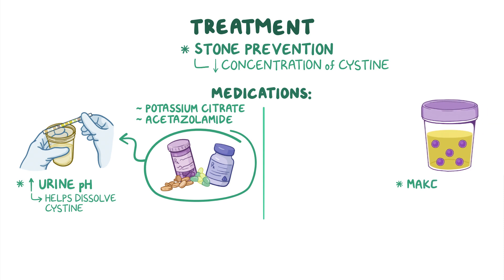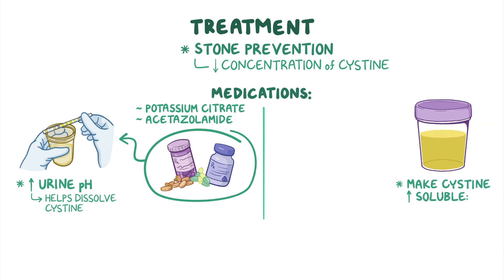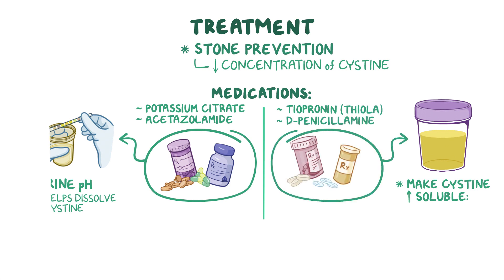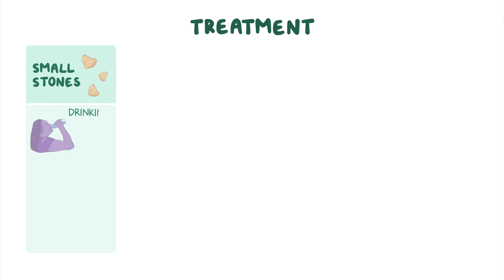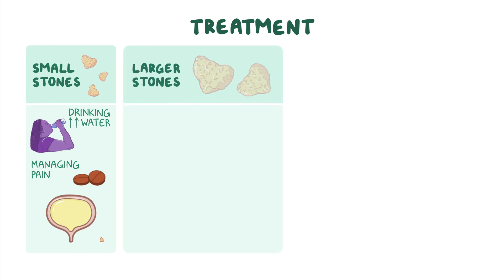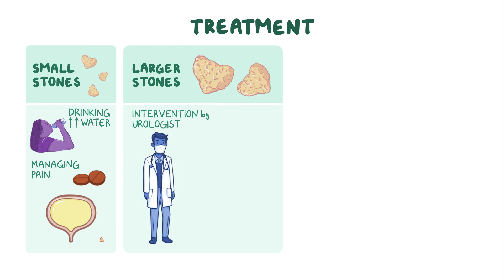Other medications can make cysteine more soluble, like alpha-mercaptopropionylglycine, also called tiopronin or Thiola, and the lesser-used D-penicillamine. If small stones form, drinking large amounts of water and managing pain may be enough to naturally pass them out of the urinary tract. Larger stones that can't pass on their own may require intervention by a urologist, especially if they are obstructing urine flow. Surgery may be needed to physically remove them, or laser techniques may be used to break them into smaller pieces.